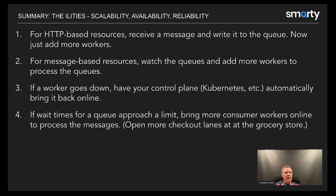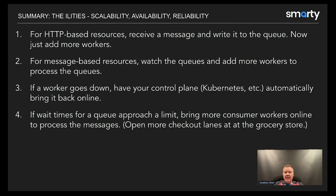So what's the summary? For HTTP-based resources: receive a message, write it to a queue; if you need to receive more HTTP messages, spin more up. For message-based resources: watch the queues and add more workers to process them. If queues are getting too long, add more workers. If a worker or single node goes down, have your control plane — ideally Kubernetes or Nomad — automatically bring another worker online, so you're not woken up at 3 AM. If wait times in a queue approach the limit, bring up more consumer workers — very similar to opening another grocery store checkout lane.